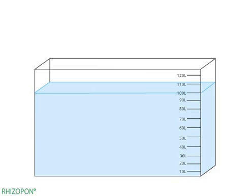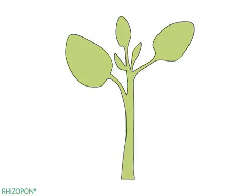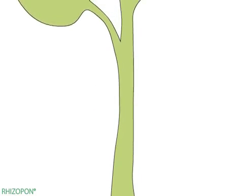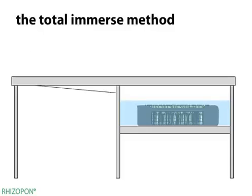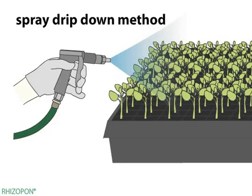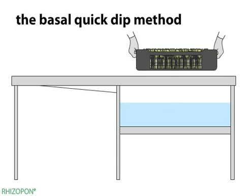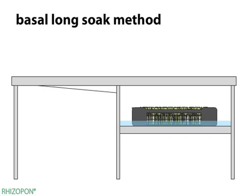Rhizopon water-soluble tablet rooting solutions are used by many methods. The rooting solutions are used to propagate plants from cuttings and to improve root formation. For plant propagation from cuttings, foliar or basal methods are used. The Rhizopon rooting solution is applied to the foliage of cuttings by the total immerse and spray drip down methods, or by the basal quick dip and basal long soak methods.